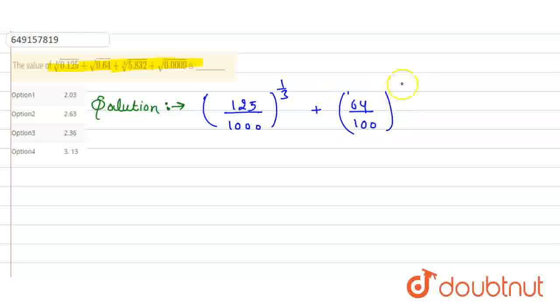Then I can write 5832 divided by 1000, and its power 1 by 3. And plus, I can write 9 divided by 10000 to the power 1 by 2. Now I will write it in the next step.